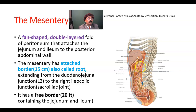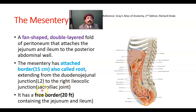The mesentery has an attached border and a free border that carries the coils of intestine. The attached border extends from the duodenojejunal junction at the level of lumbar vertebra 2 to the right ileocolic junction at the level of the right sacroiliac joint. The free border is about 20 feet long, while the attached border is around 15 centimeters. The free border contains the jejunum and ileum.